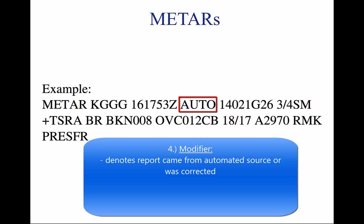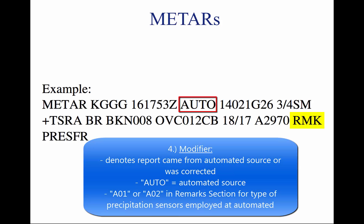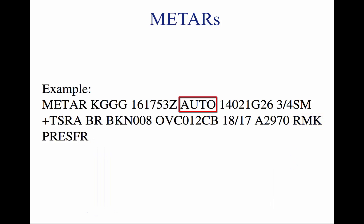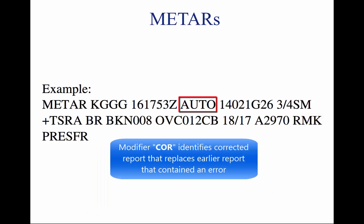Four, modifier — AUTO, denotes that the METAR came from an automated source or that the report was corrected. If the notation AUTO is listed in the METAR, the report came from an automated source. It also lists A01 or A02 in the remarks section to indicate the type of precipitation sensors employed at the automated station. When the modifier COR is used, it identifies a corrected report sent out to replace an earlier report that contained an error.